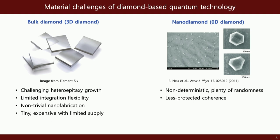Growing diamond — especially single-crystal diamond on top of other materials — is a very tricky task. Otherwise we'd see a lot of demonstrations of diamond-based microelectronics or fashion jewelry, but you don't see them because heterogeneous growth is very hard. Also, diamond is a very hard material and chemically inert.